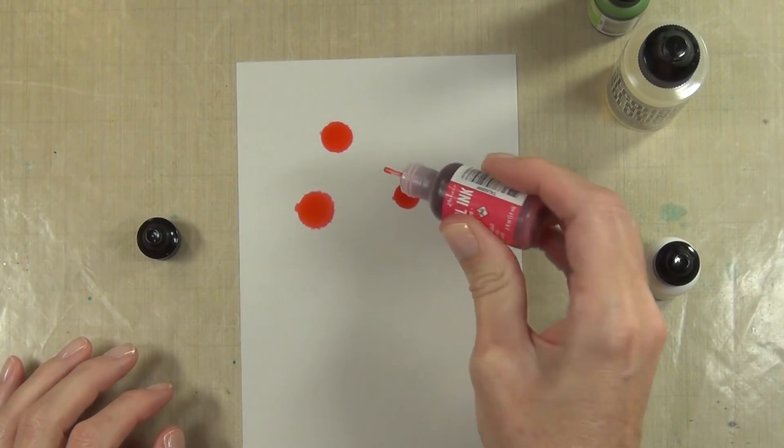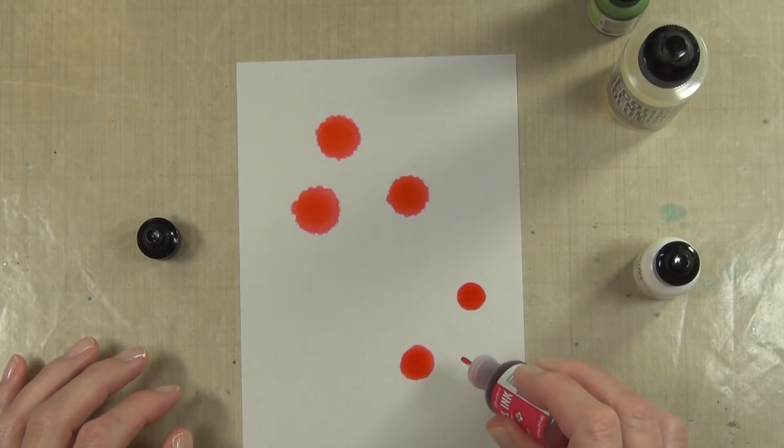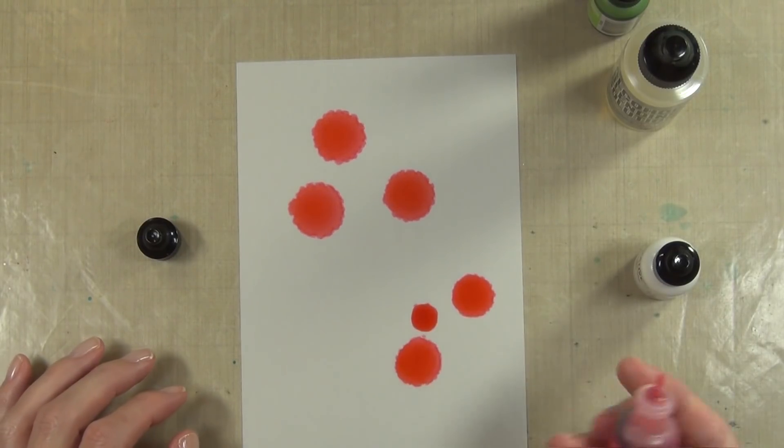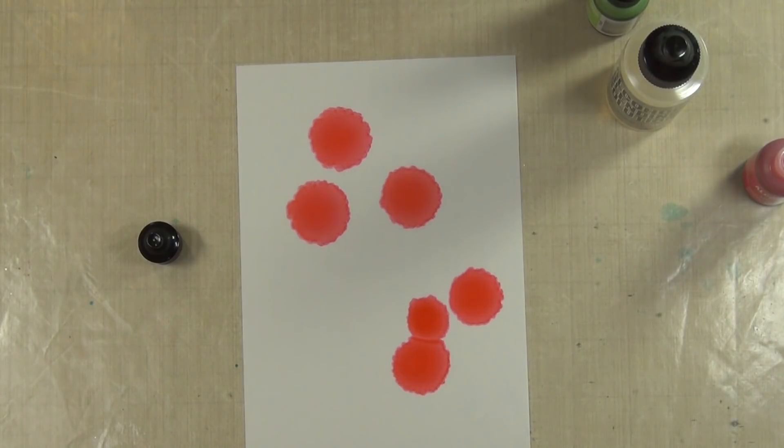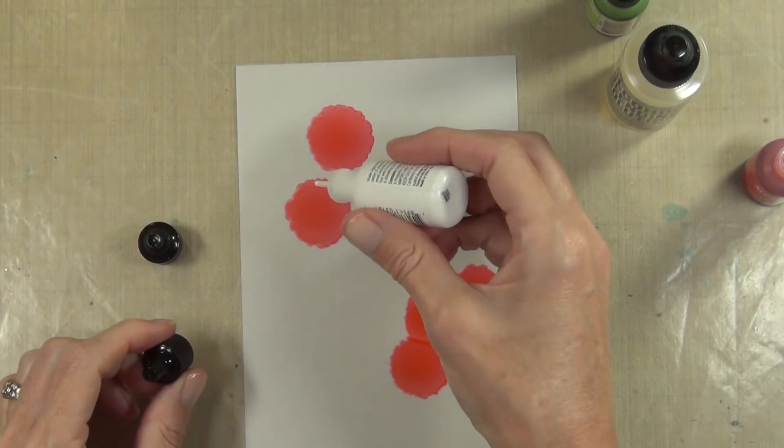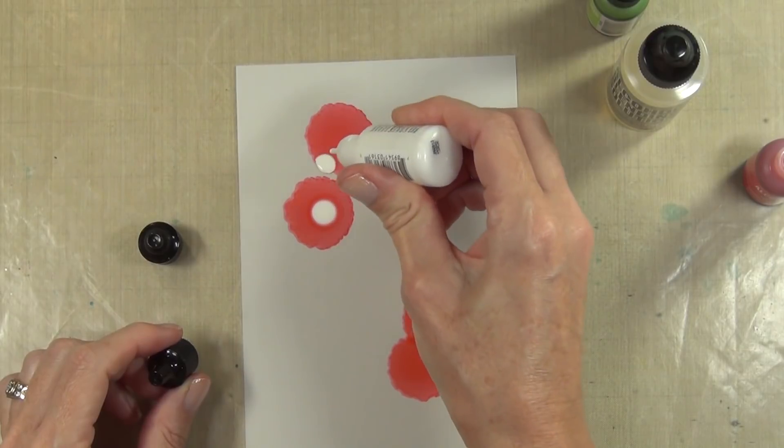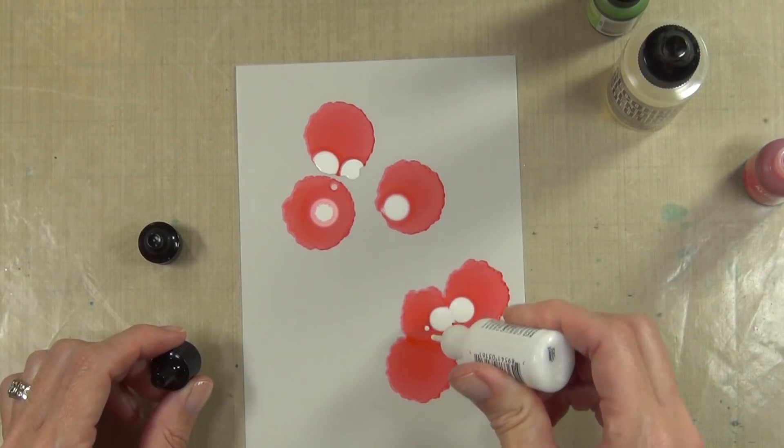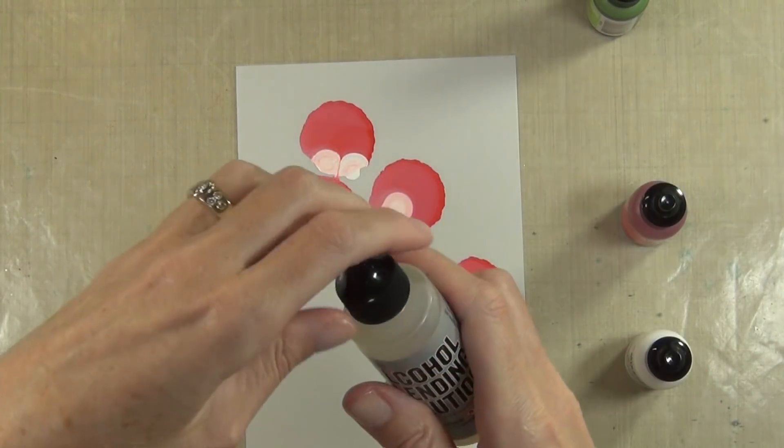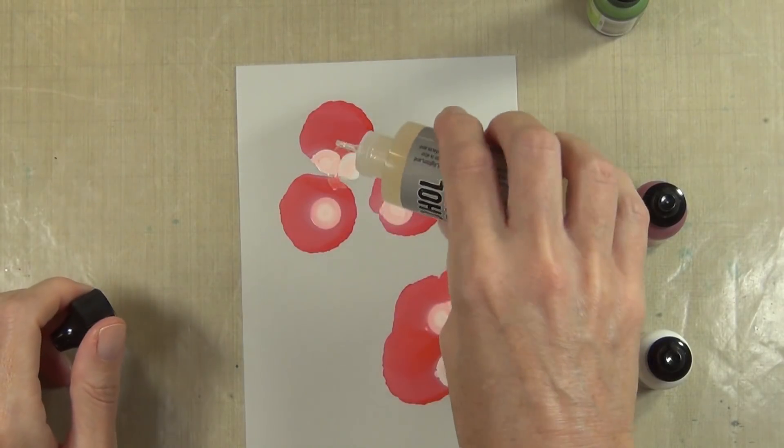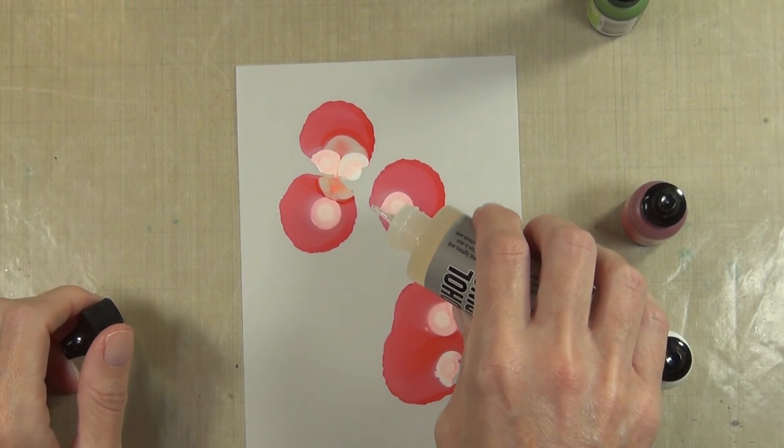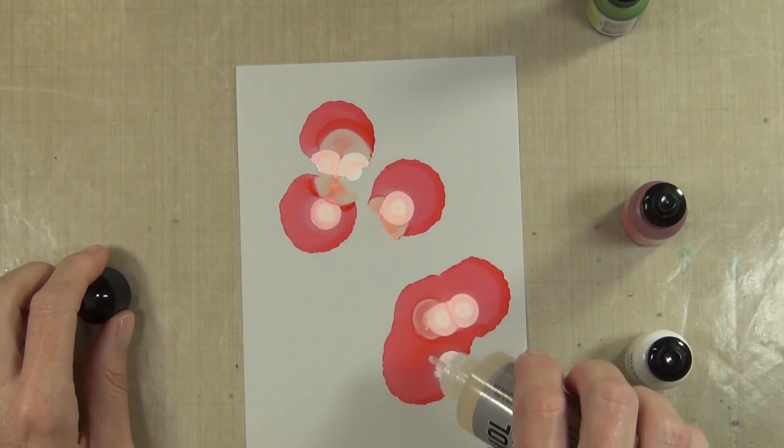All right, so I've got some translucent Yupo paper today and I thought I'd give it a try. I like the idea of a see-through or vellum style, which is kind of what this is. It's like a really thick vellum but it's still that synthetic paper.